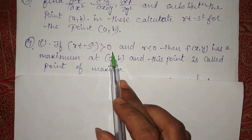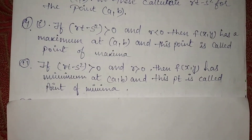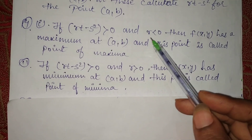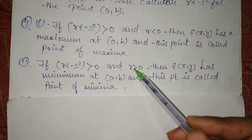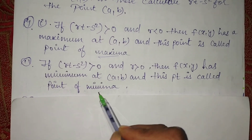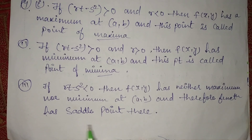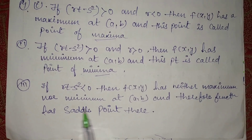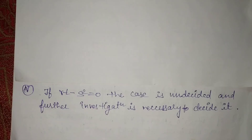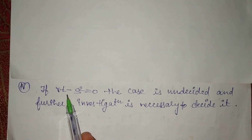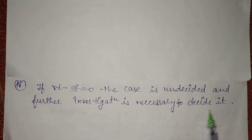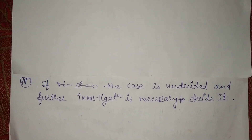If rt minus s² is greater than zero and r is less than zero, then it is maxima. If rt minus s² is greater than zero and r is greater than zero, then it is minima. If this value is less than zero, the points are neither maxima nor minima. And if rt minus s² equals zero, the condition cannot be decided.